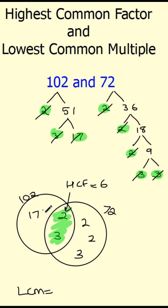Your lowest common multiple, we multiply everything across the diagram together, and that gives us 1,224. So highest common factor is the part in the middle. Lowest common multiple, multiply everything together.